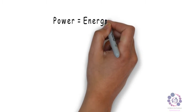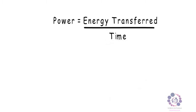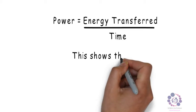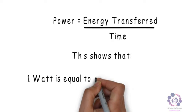Now power equals energy transfer divided by time if we rearrange it. Therefore one watt is equal to energy transfer of one joule of energy per second.